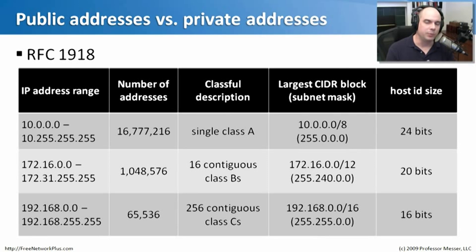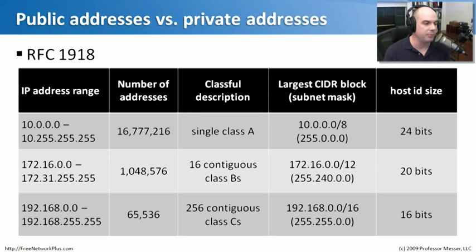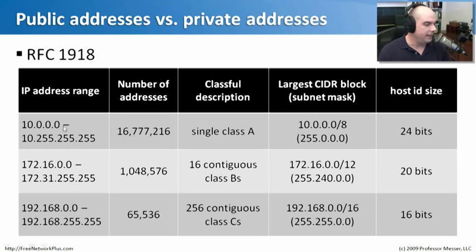Many networks these days are using private addresses for their IP address range. If you're on a local network at a SoHo, in your house with a wireless router, or connected to a cable modem through a router, you're probably using a private addressing scheme. One reason we use private addressing is to minimize the impact of everybody's house being on the internet. You don't have to use a public or routable IP address. There is an RFC 1918 that says these IP address ranges cannot talk on the internet — they're non-routable, only used behind a firewall or router on a local network.